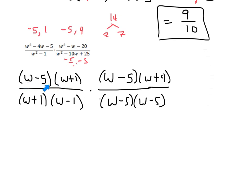Now that we've got everything factored — short-key, difference of squares, short-key, short-key — just like simplifying fractions, anything that matches up on the top with anything on the bottom we can cancel out. We have a w minus 5 here and a w minus 5 over here, so we cancel those. We've got a w plus 1 here and a w plus 1, so we cancel those. And we have one more w minus 5 on the top and the bottom — we can get rid of those too. What we have left on top is w plus 4 and on the bottom we have w minus 1. So our final answer is w plus 4 over w minus 1.